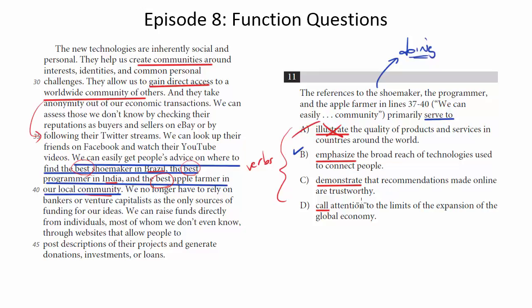Demonstrate that recommendations made online are trustworthy. Again, in some sense this is what is being said, right? We can get information about the best shoemaker in Brazil, the best programmer in India, and I guess in some level that's going to be trustworthy. But the purpose of this sentence is not to demonstrate that. The purpose of the sentence is to demonstrate in some sense or emphasize that we can learn this information using this technology in a way that we haven't been able to do before, in a way that we're able to do with building communities, finding friends, and so on. So C is not quite right.